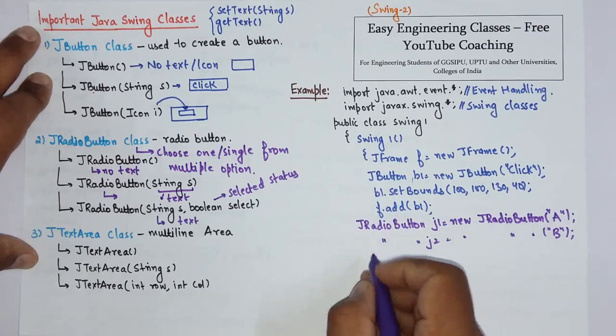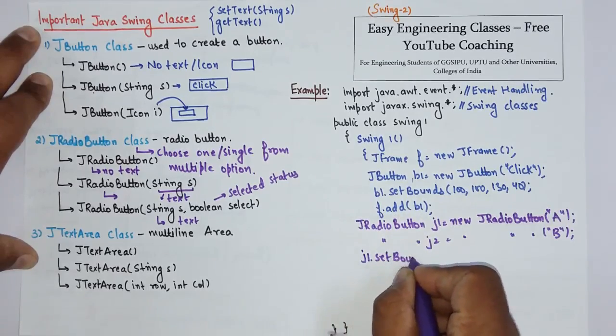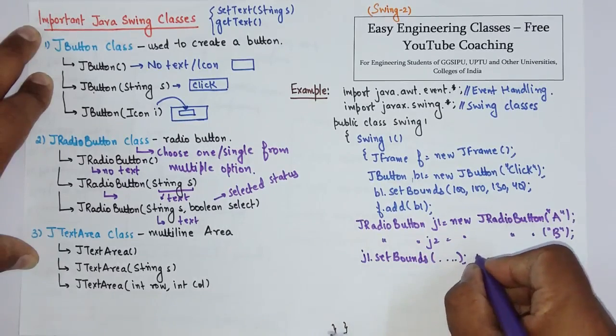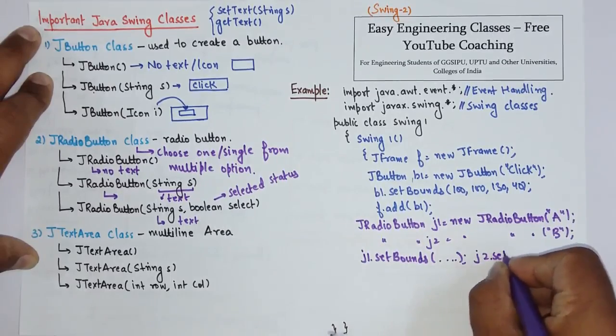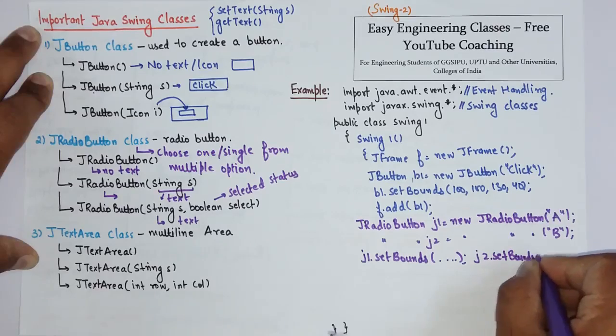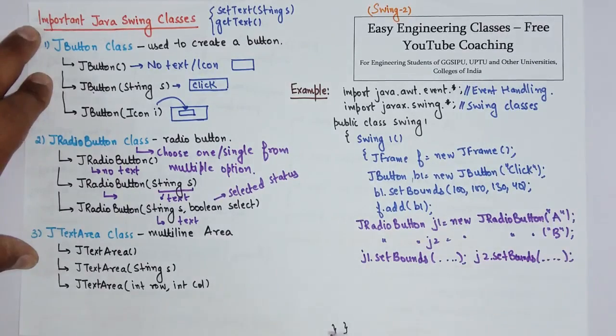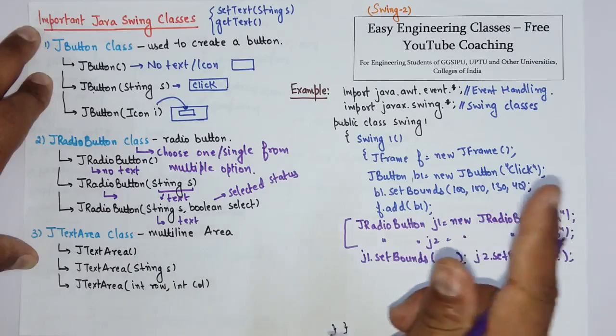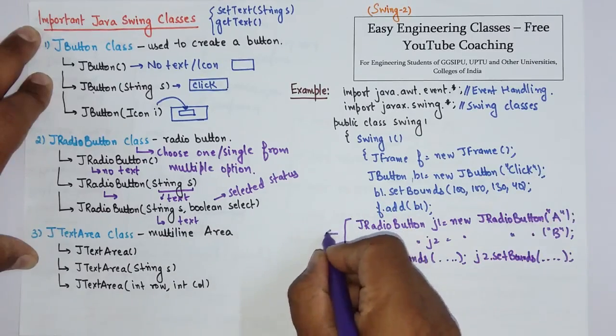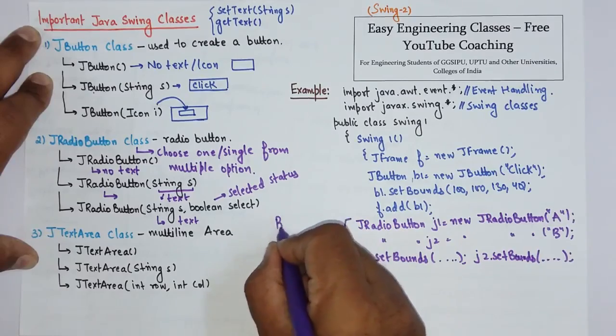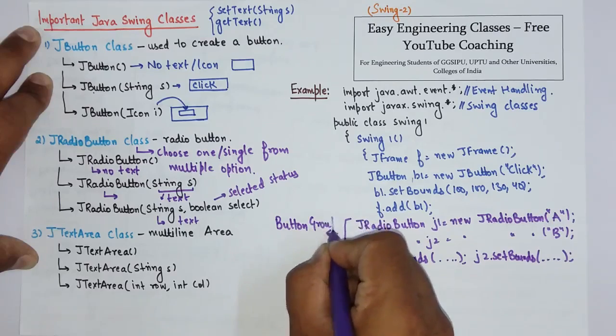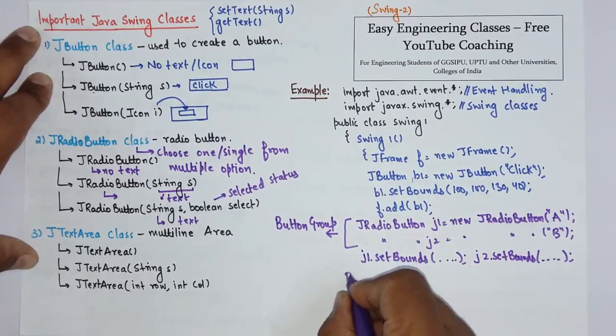Set the position using setBounds, so you can write like this: J1.setBounds, specify the coordinates, and J2.setBounds, specify the coordinates. Now to make these two radio buttons part of a single group you have to use the class ButtonGroup. So we have to use the ButtonGroup, so create object of ButtonGroup class.